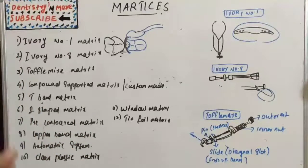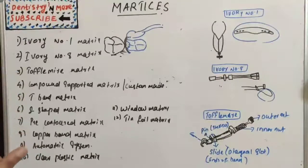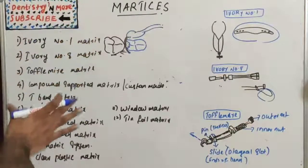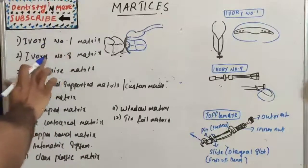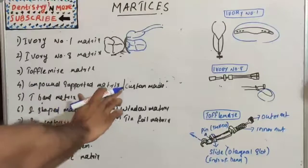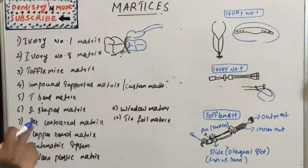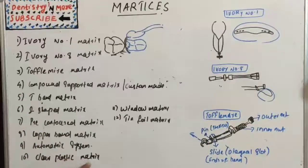Depending upon the cavity preparation: for class one we use double-banded Toffelmyer; class two we use ivory number one, eight, T-band, or auto matrix; for class three we use S-shaped matrix, mylar strip, or cellophane strip; class four again uses cellophane strips; class five uses tin foil matrix or window matrix. Overall classifications include ivory number one, number eight, Toffelmyer, compound supported matrix, T-band, S-shaped, pre-contoured, copper band, auto matrix, clear plastic, window, and tin foil matrix.